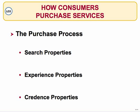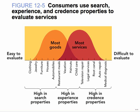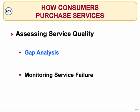When purchasing services, there are search properties, experience properties, and credence properties. On one end, it's difficult to evaluate quality — like a medical diagnosis. On the other end, it's easy to evaluate quality — like clothing. You'll see where that continuum lies. This is an area to really zero in on when you read about it.